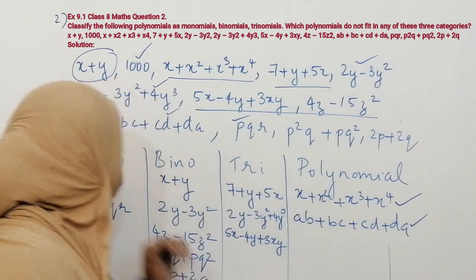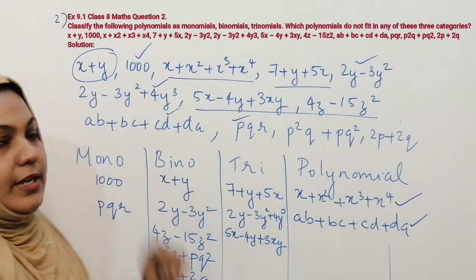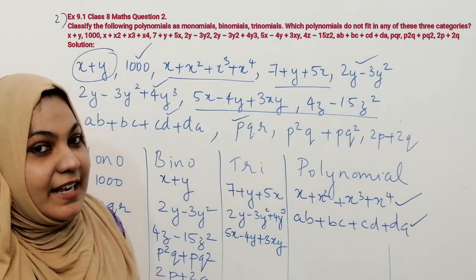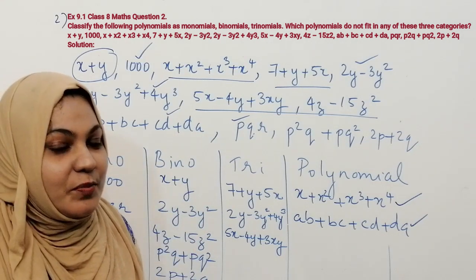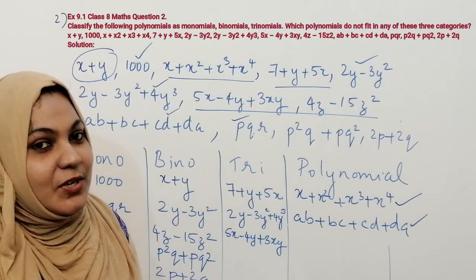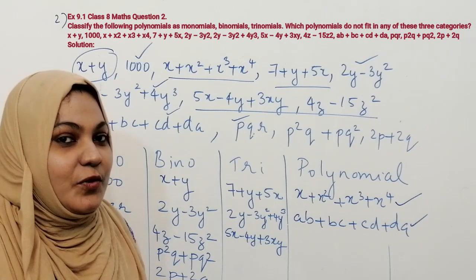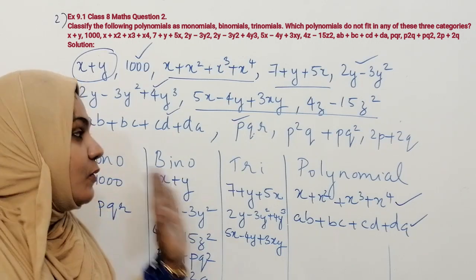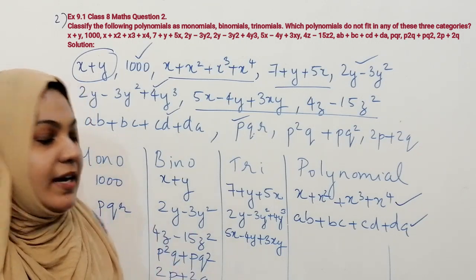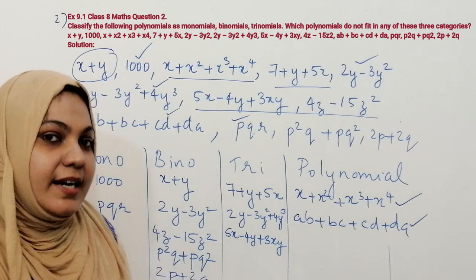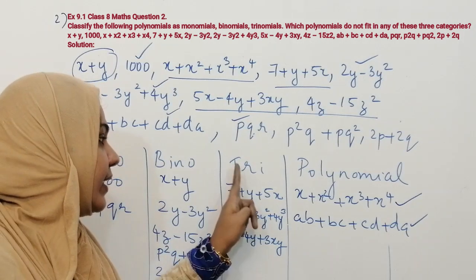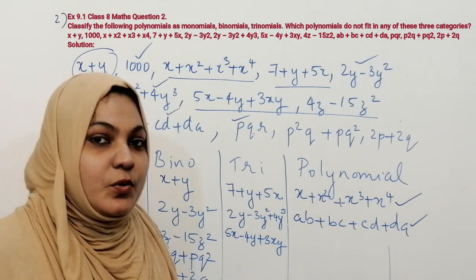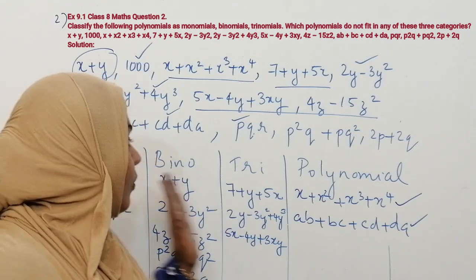I hope you understood the second question. If you are new to my channel, please watch my previous videos — I will give the link in the description box. To summarize: monomial contains only one term, binomial contains two terms, trinomial contains three terms.